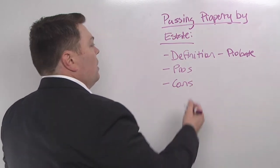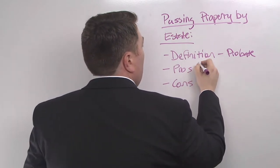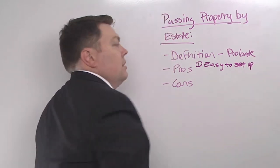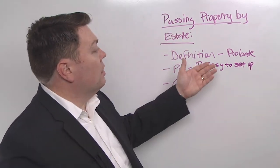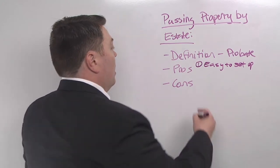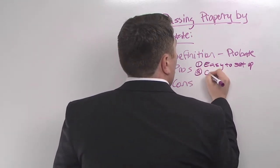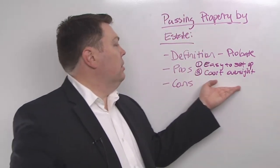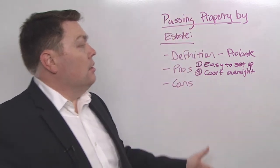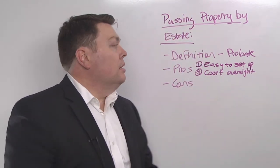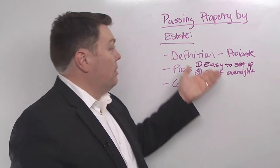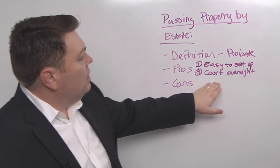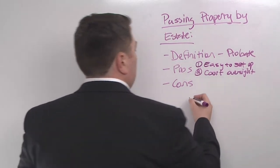Some of the pros of passing property by your estate is it is really easy to set up. Essentially, if you do nothing, your property is going to go through that probate plan. Another pro is that you have court oversight. So if you want the court to oversee your property being distributed, then it might be the right thing to pass your property through your estate. Most people find it's not because what comes along with that court oversight is the four big cons.